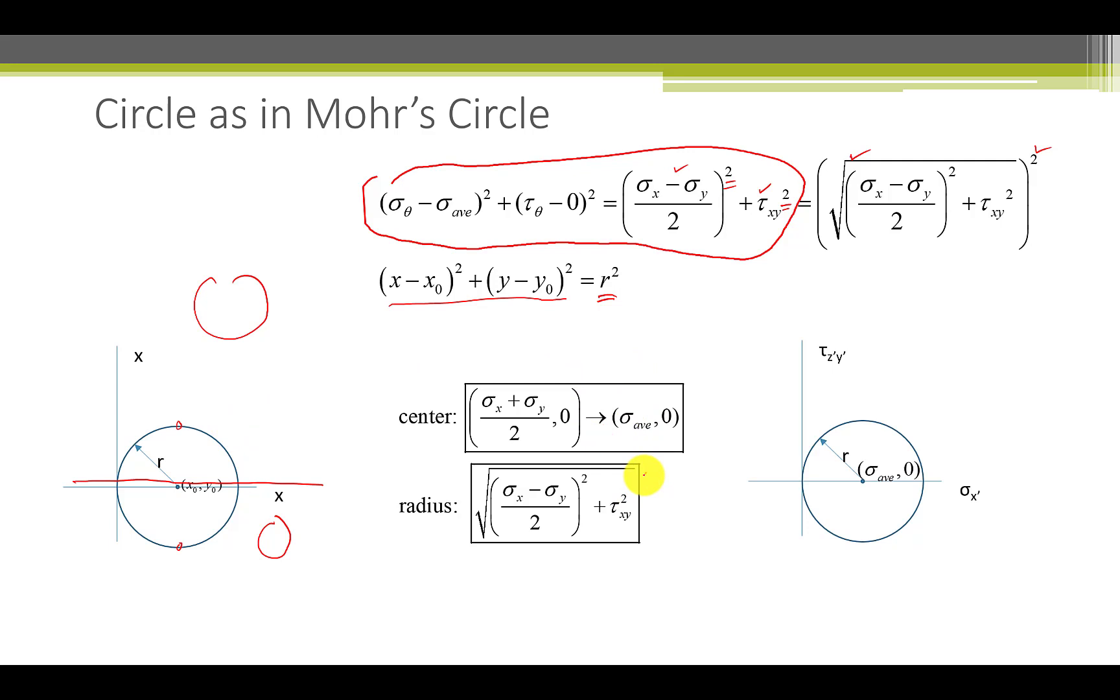The radius, as we showed just a second ago, is the quantity on the right-hand side here. So what we have for the Mohr's circle is the center is at sigma average and zero. We have the radius. The circle is located on the x-axis, and our axes are now sigma x prime. The normal stress is in the rotated coordinate system. We've called that sigma theta previously, and the shearing stress is in the coordinate system, and we've called that tau theta.